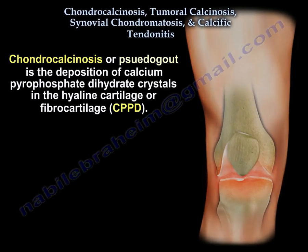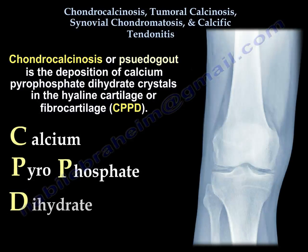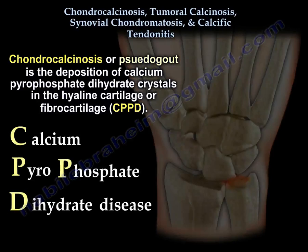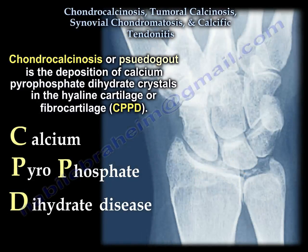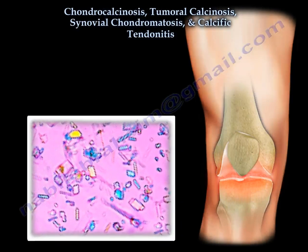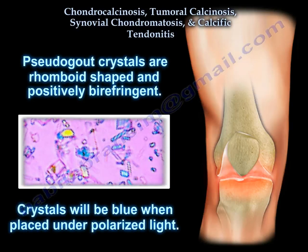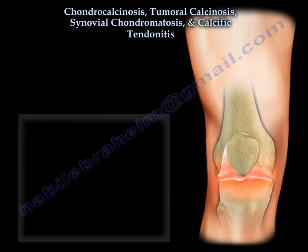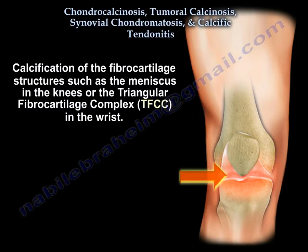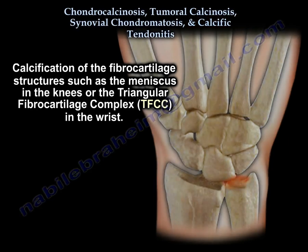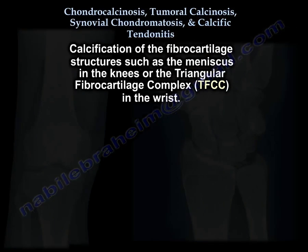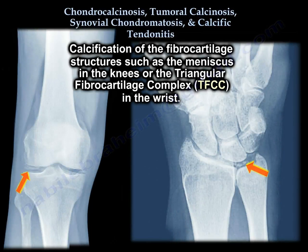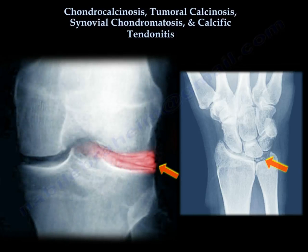Chondrocalcinosis is a metabolic disease due to deposition of calcium pyrophosphate dihydrate crystals — CPPD — it is a pseudogout. It usually affects older patients. The crystals are weakly positively birefringent rhomboid-shaped crystals, whereas uric acid crystals are needle-like and negatively birefringent. You will find calcification of fibrocartilage structures like the meniscus in the knee or the TFCC in the wrist. If you see an x-ray and find calcification of the meniscus in the knee or calcification of the triangular fibrocartilage in the wrist, it means the patient has pseudogout or chondrocalcinosis.